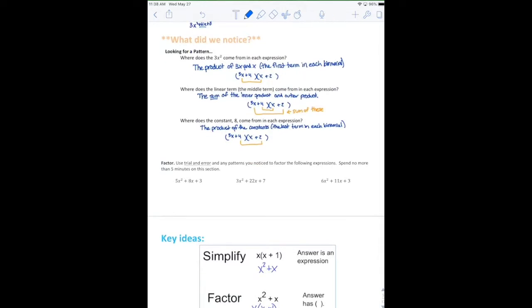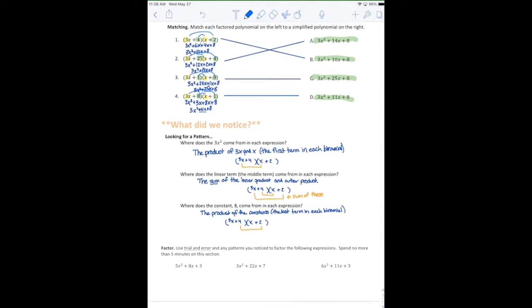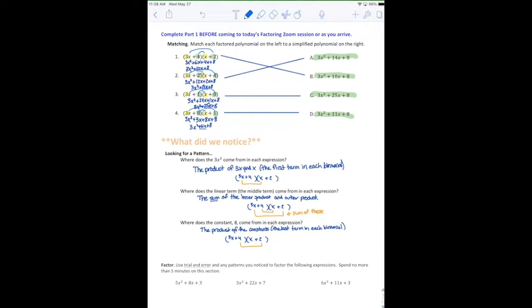So you may have tried these ones at the bottom and been able to factor them. I don't have the answers in front of me, so I'm not going to do them out right now. But does anyone have questions about these patterns, like where we get this first term, this middle term, or this last term?